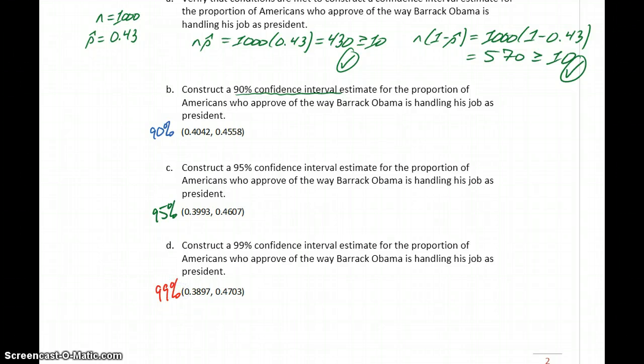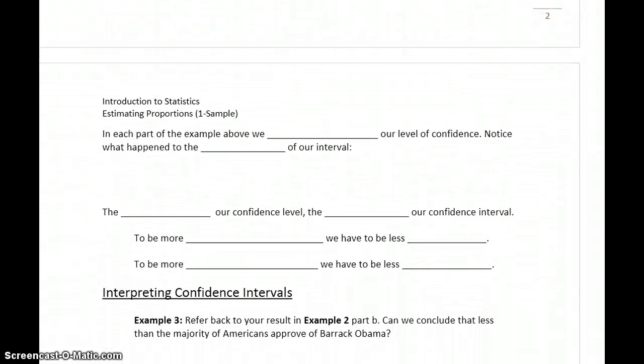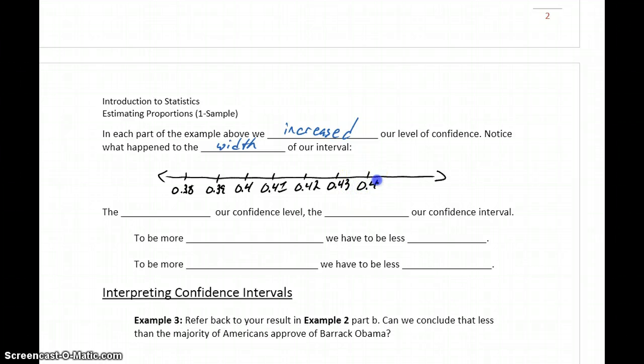In the examples we looked at, in each case we increased our level of confidence and the width of each of those intervals changed. If we set up a number line here starting at 0.38, 0.39, 0.4, up to 0.45 actually. We need to go just a little bit higher here, 0.46 and 0.47.